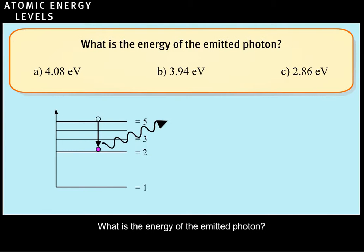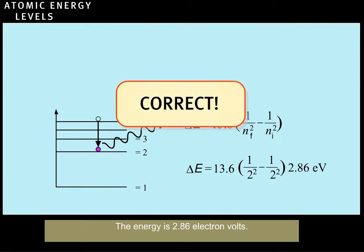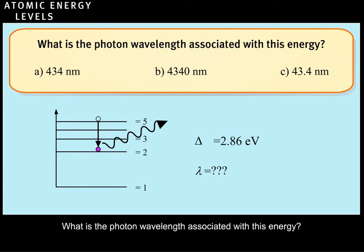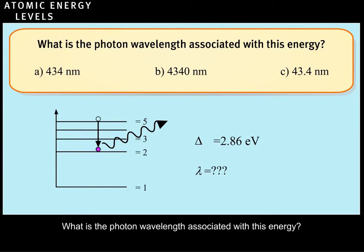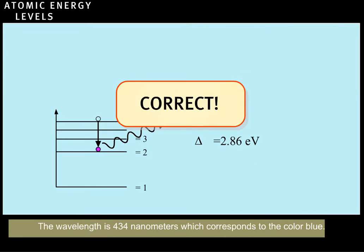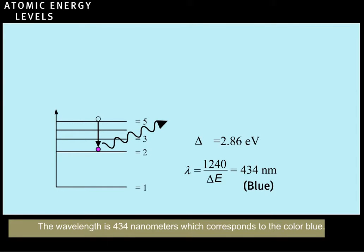What is the energy of the emitted photon? Correct. The energy is 2.86 electron volts. What is the photon wavelength associated with this energy? Try again. Correct. The wavelength is 434 nanometers, which corresponds to the color blue.